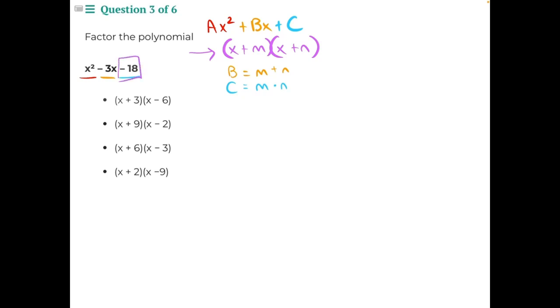What we'll need to do is create a factor tree for the number negative 18 because we need to find two numbers that when multiplied together will give us negative 18, but when added together will give us our b value of negative 3. So we need to find possible pairs of numbers that could be factors of negative 18.